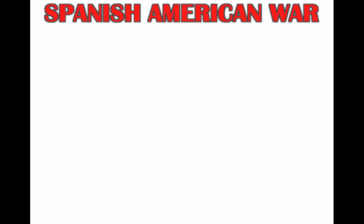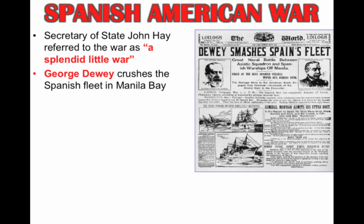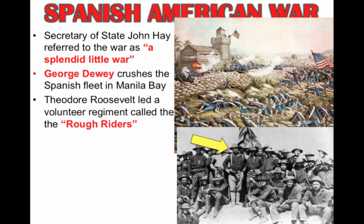The Spanish-American War was nicknamed by Secretary of State John Hay as 'the splendid little war.' It lasted four months; only about 400 Americans died in actual fighting, though thousands more died from disease. It began in the Philippines — George Dewey, an American naval official, crushed the Spanish fleet in Manila Bay. Theodore Roosevelt resigned as Assistant Secretary of the Navy and joined the Rough Riders in the famous Battle of San Juan Hill in Cuba. The war ended in August 1898 with the Treaty of Paris.